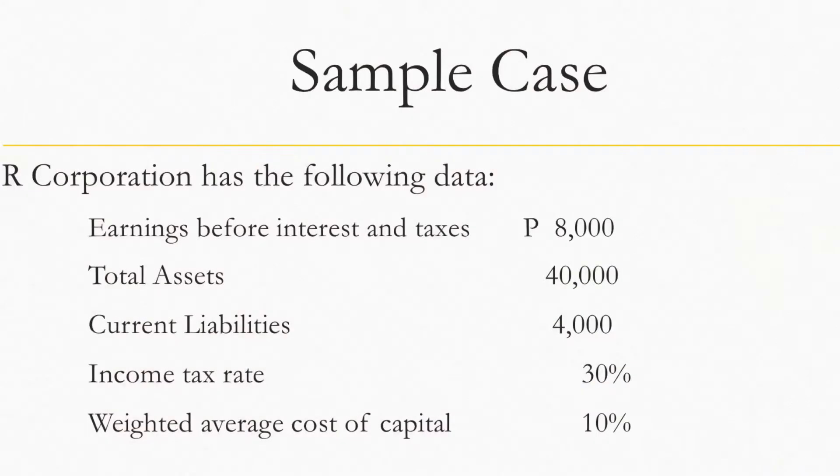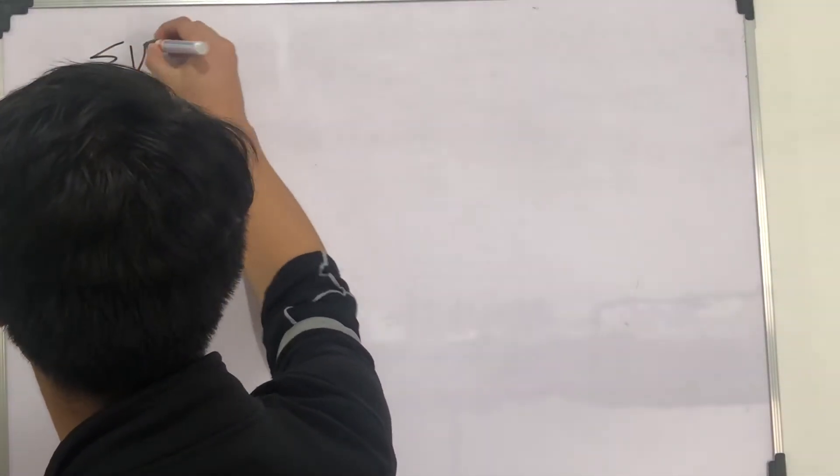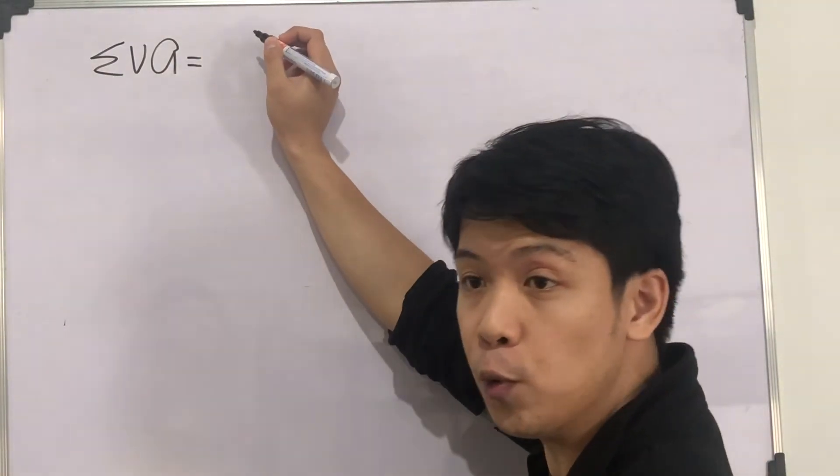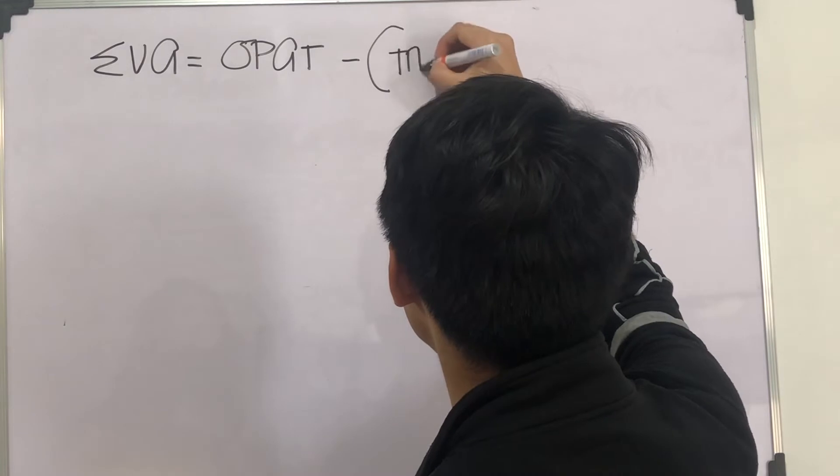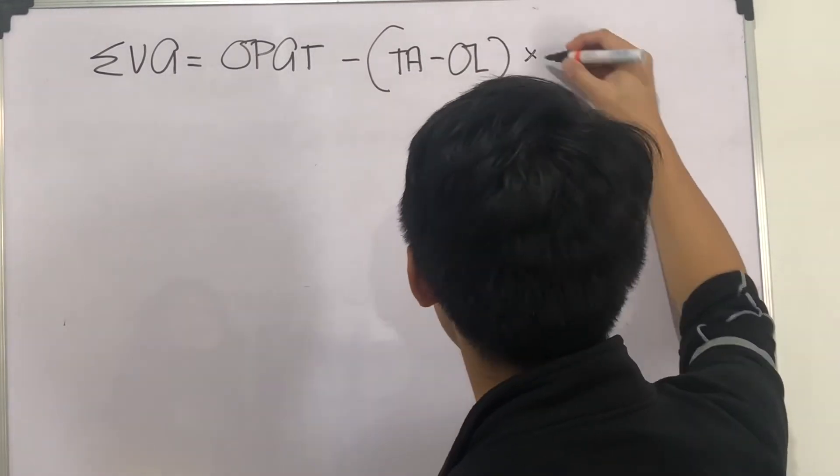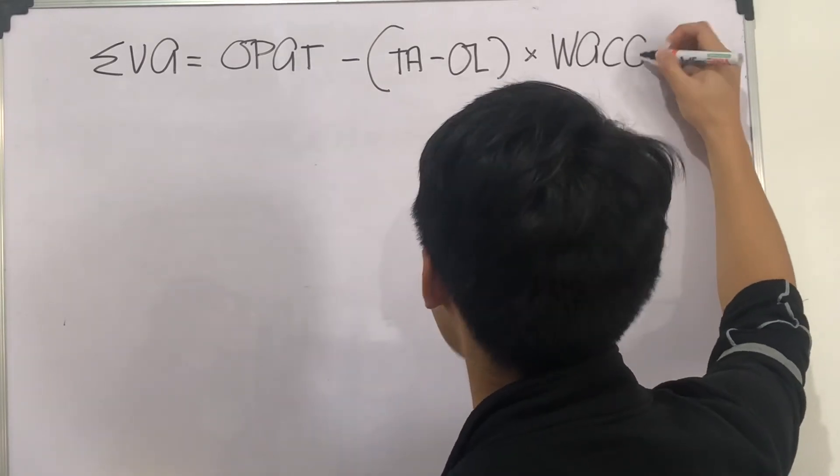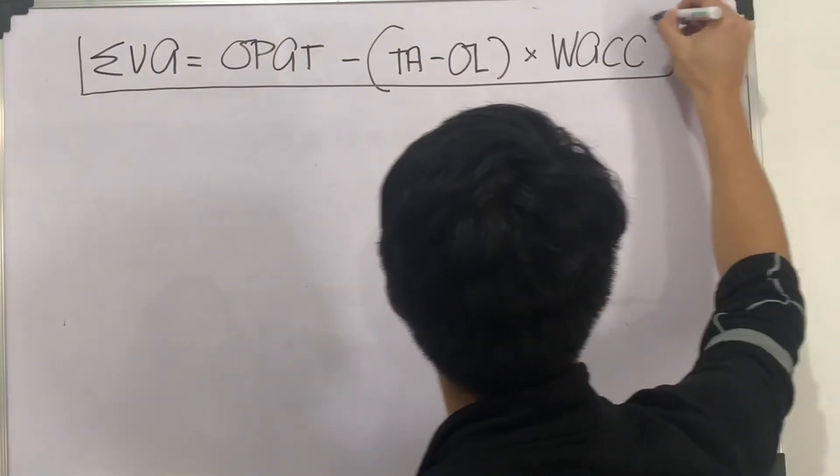To give you a sample case on the calculation of economic value added, we have the following. Our corporation has the following data: earnings before interest and taxes, $8,000; total assets, $40,000; current liabilities, $4,000; income tax rate, 30%; and the weighted average cost of capital, 10%. Let us calculate the EVA for this company. Economic value added, this is equal to operating profit after tax less total assets minus operating liabilities multiplied by the weighted average cost of capital. Well, this is the formula of the economic value added.